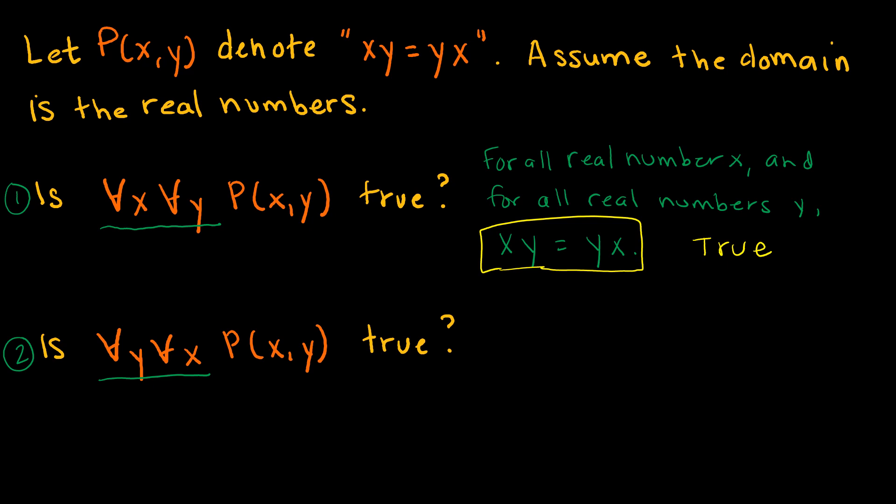So I've shown the first one is true. Now, statement two says: for all y and for all x — so for all real numbers y and for all real numbers x, is that statement still true? Yes, in fact it is. Because as we said, the order doesn't matter. Both of these statements are true; it didn't matter if x came first or y came first.